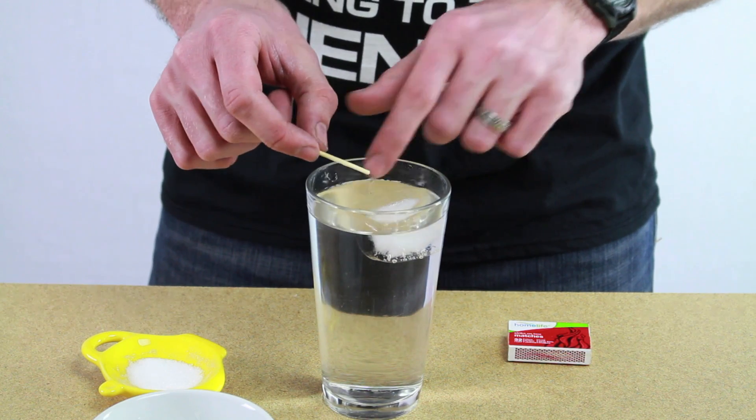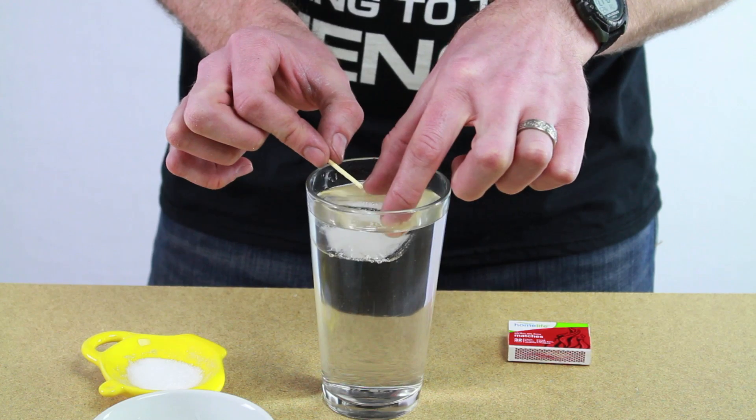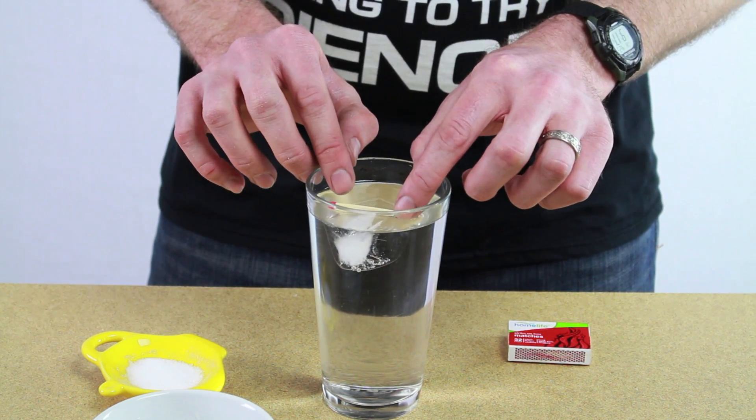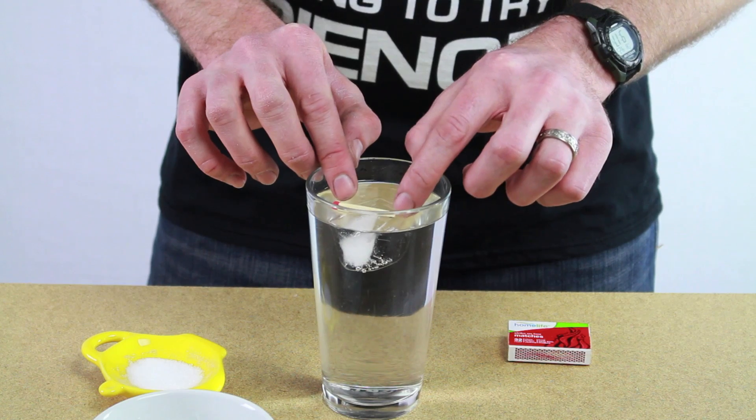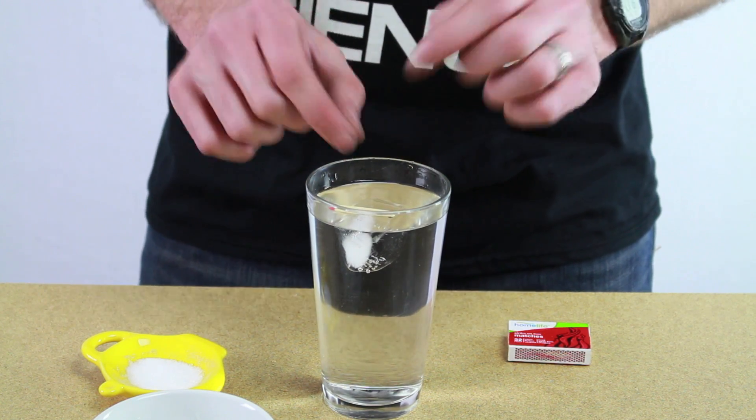So you have your ice cube, and then you want to stick it right in the middle, put your match right on top of the ice cube, like with one side sticking out.